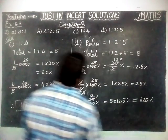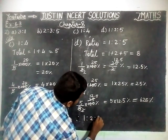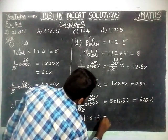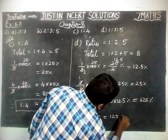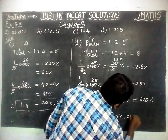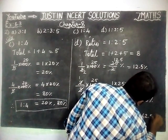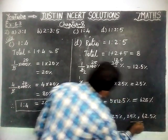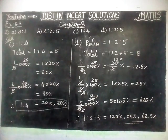Therefore, ratio 1 is to 2 is to 5 equals 12.5 percentage, 25 percentage, and 62.5 percentage. That's all, students. Kindly give your suggestions in the comments box. Share this video with your friends and subscribe to our channel. Thank you.